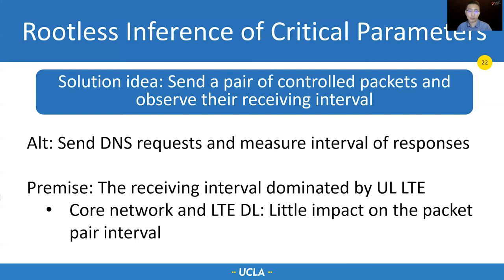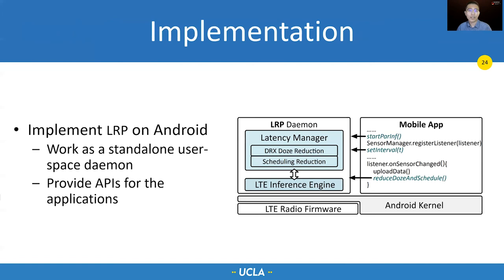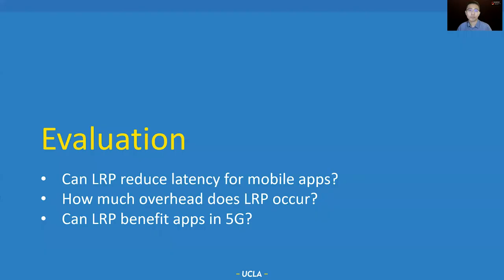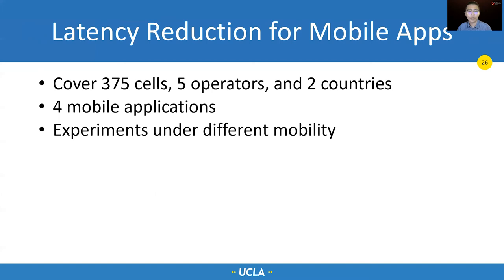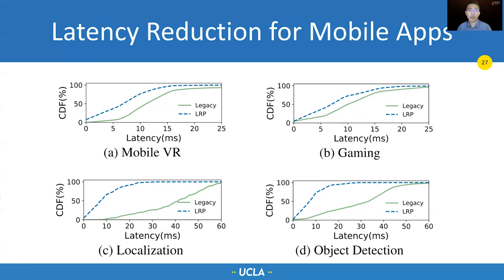LRP is widely applicable — it can benefit 5G, still works when there's background traffic or packets are not strictly regular, and has little impact on the network and other users. We implement LRP on Android as a user-space daemon; an Android application can use our APIs to reduce latency. We evaluate LRP in operational networks, covering 375 cells from five operators in two countries. We test how LRP works with four different applications in different scenarios. LRP can significantly reduce the median and 95th percentile network latency for all applications. The latency reduction is more obvious for localization and object detection, as they suffer DRX-doze latency more frequently.